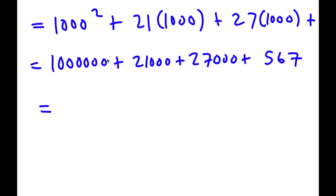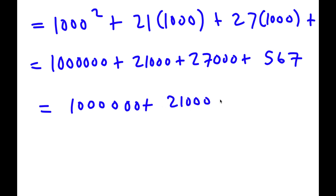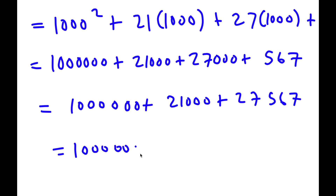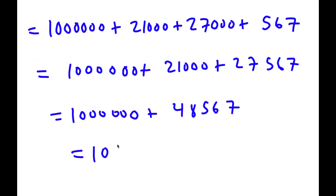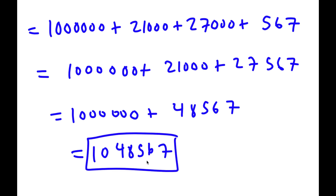Now all that's left is to add these up. 567 plus 27,000 is 27,567. Plus 21,000 gives 48,567. And plus 1,000,000 gives 1,048,567. So that is my answer.